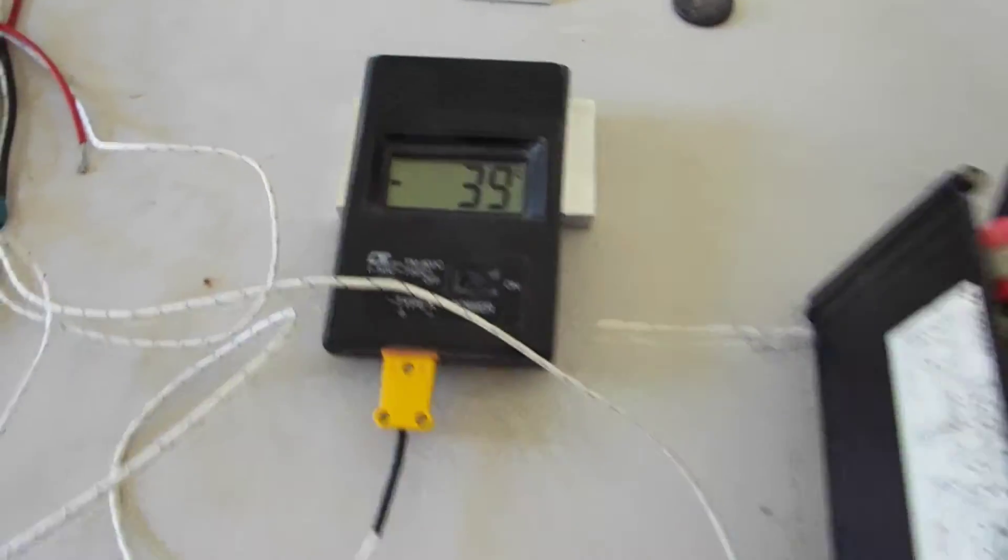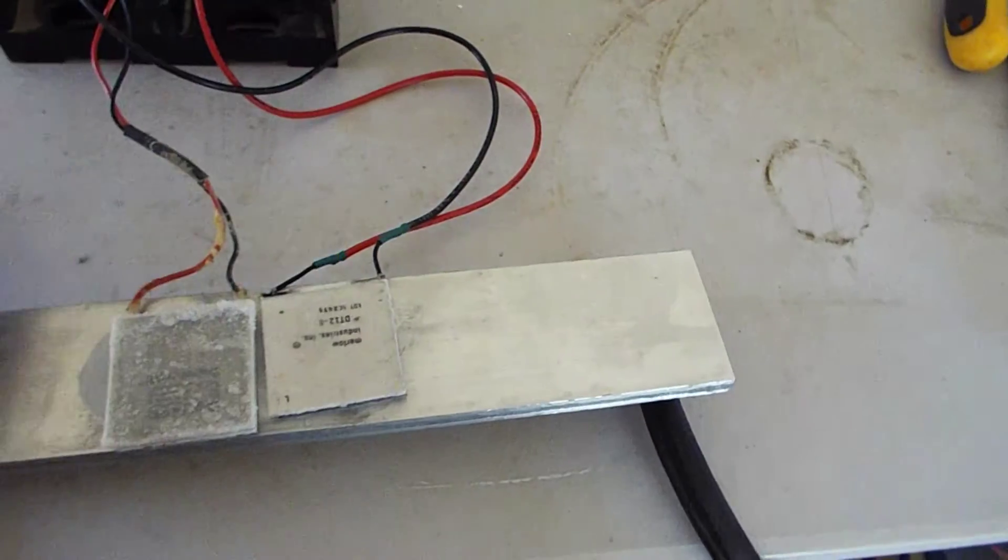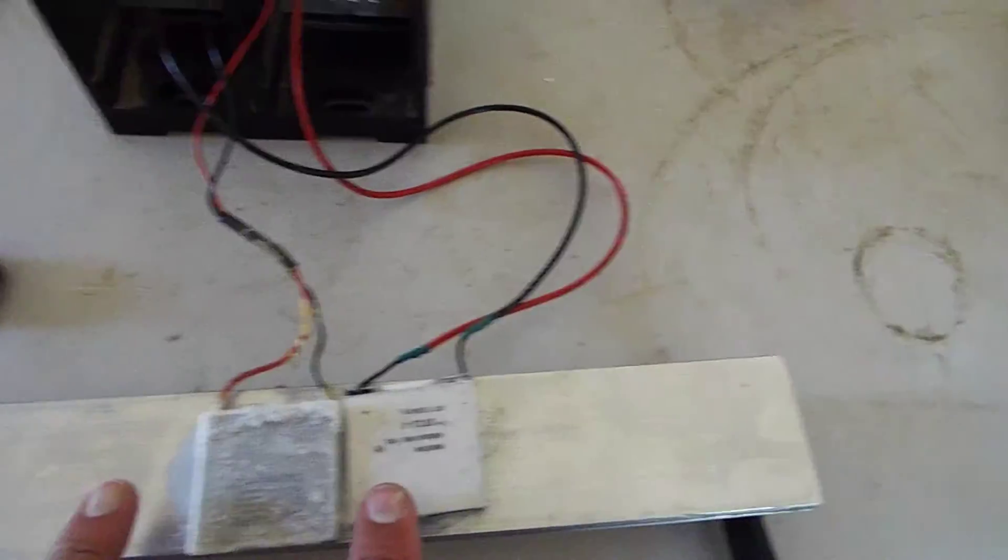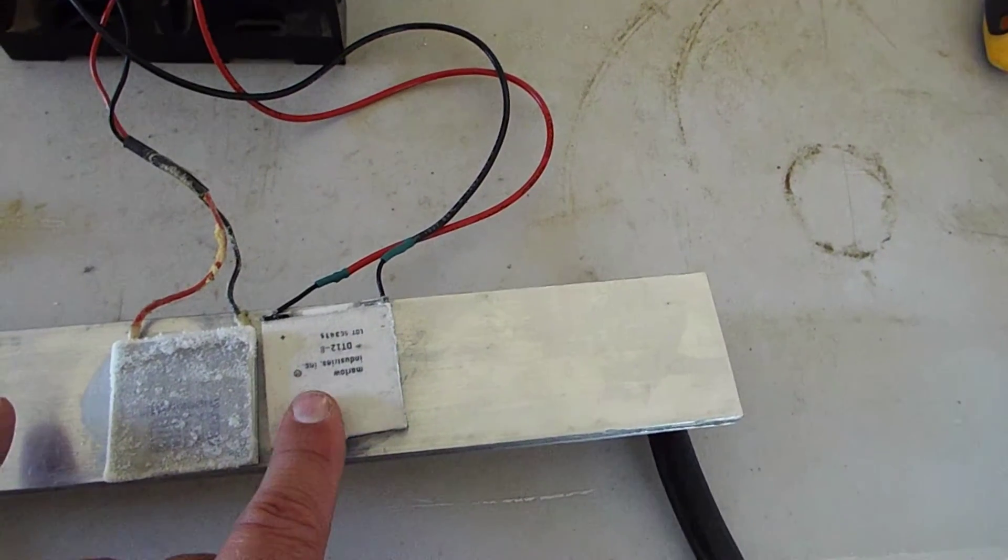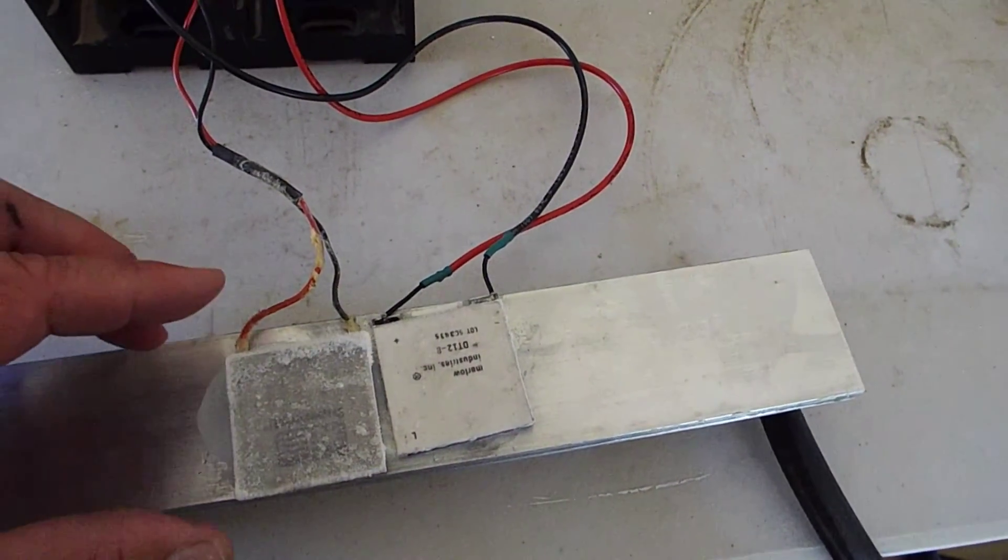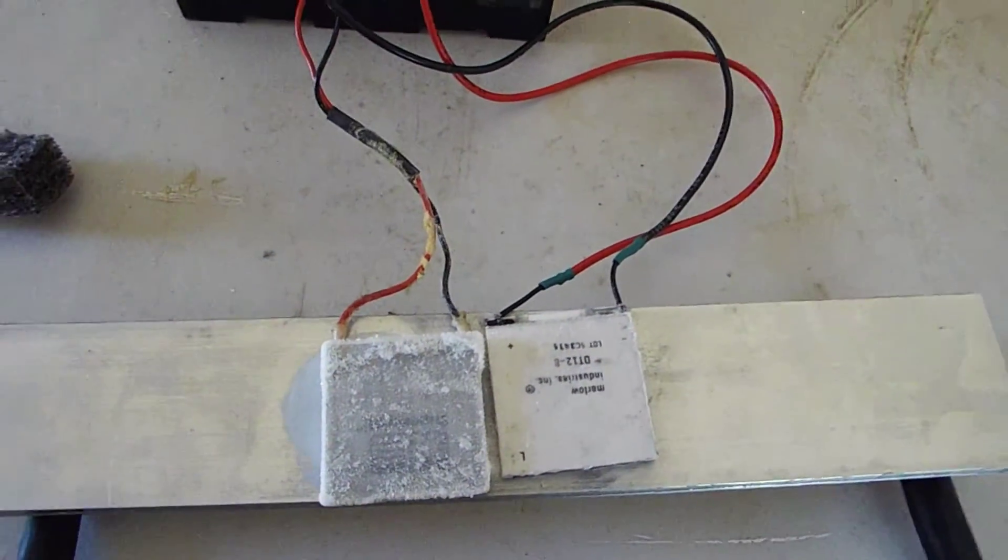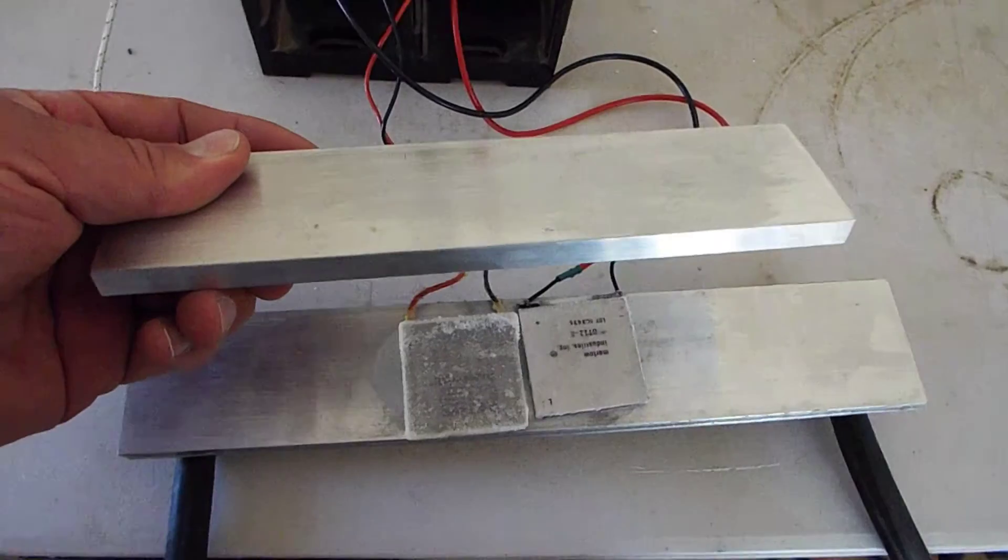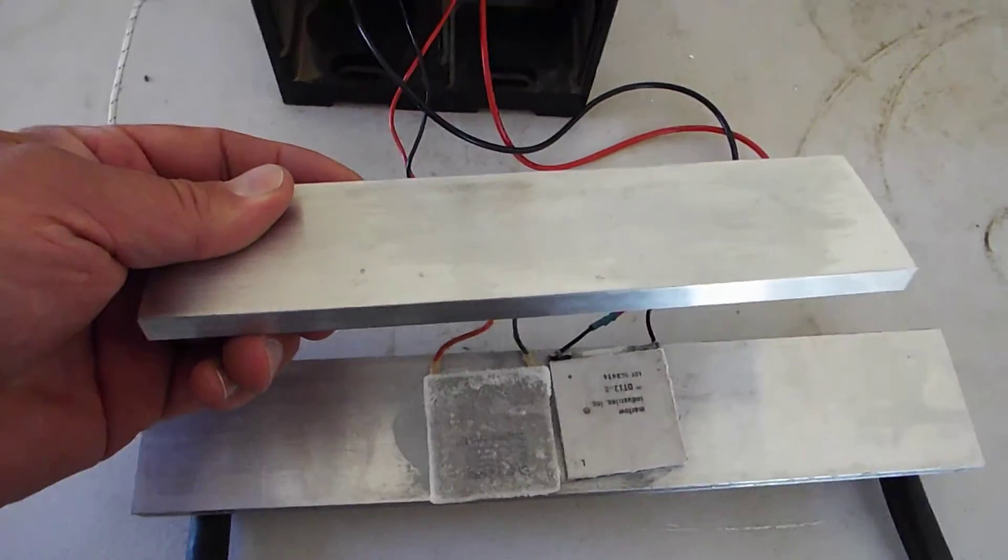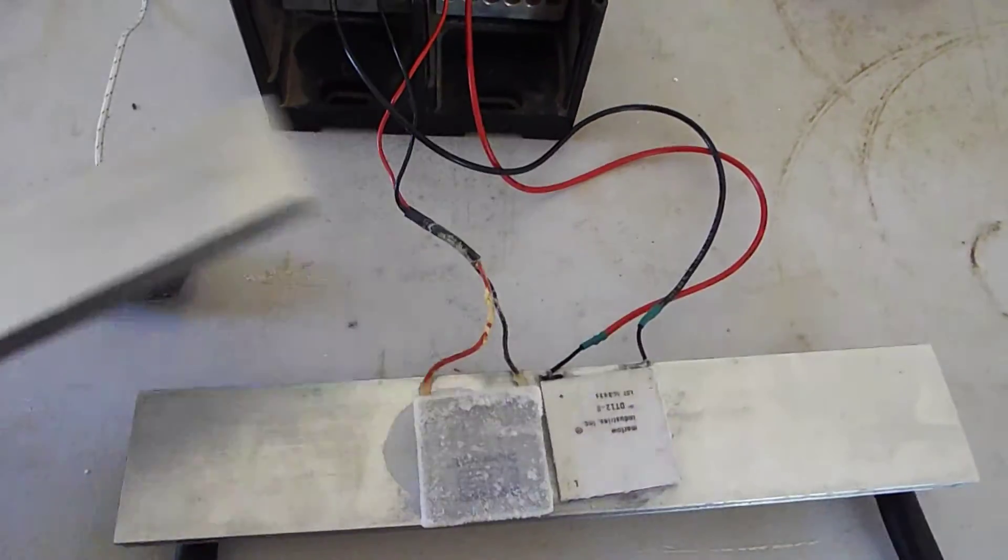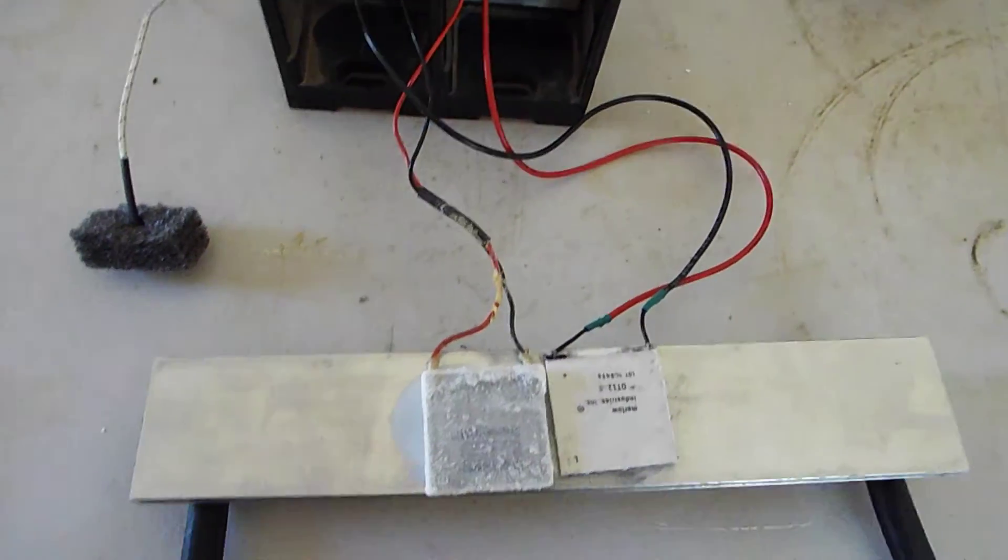The next experiment will be to actually build a two-stage cooler out of four of these DT-12s on the bottom stage, and I'm going to put a single DT-12 on the second stage. There'll be this big aluminum block to transfer the heat from the single stage down to the four on the bottom second stage. So that'll be the next experiment.